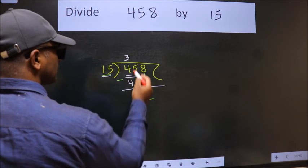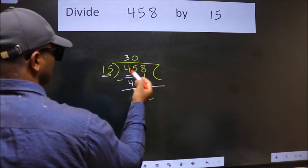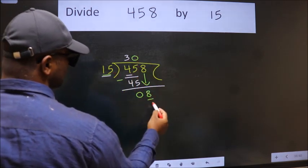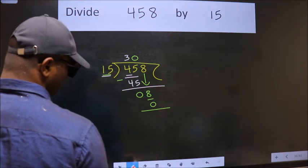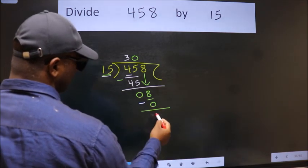So what we do is we take 0 here. So 15 into 0, 0. Now we subtract. We get 8.